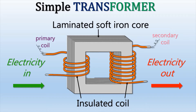The primary coil is connected to a battery and the secondary coil is connected to a galvanometer. When an alternating current passes through the primary coil and a magnetic field is induced, the electromagnetic induction causes a current to flow in the secondary coil.